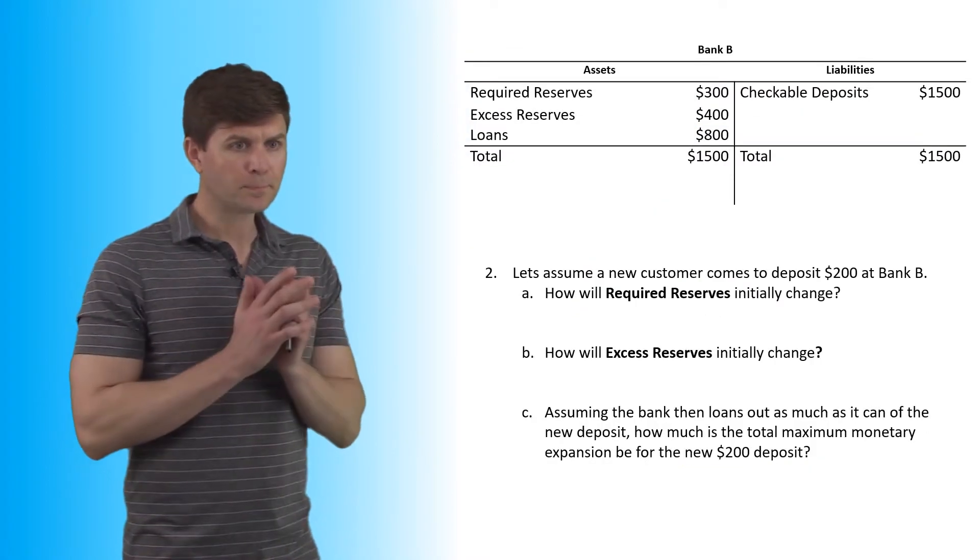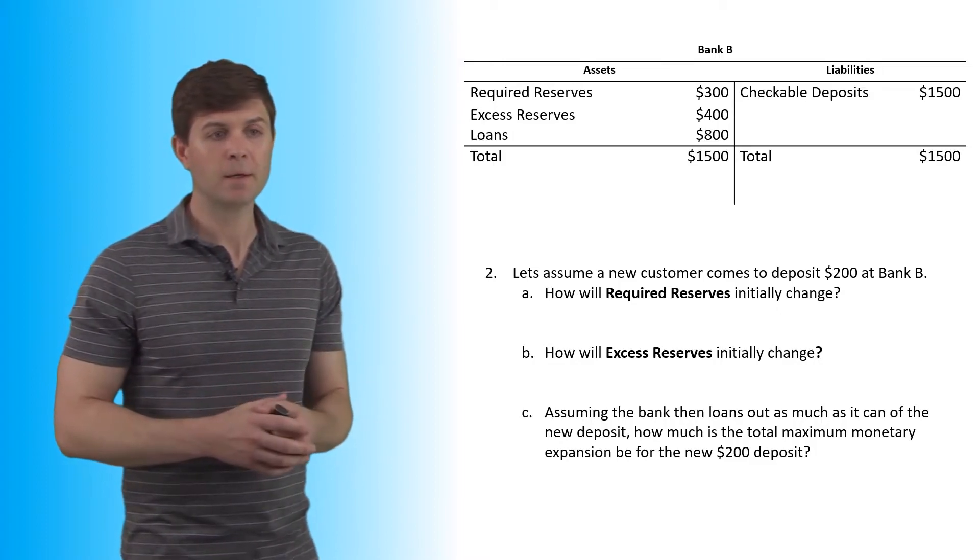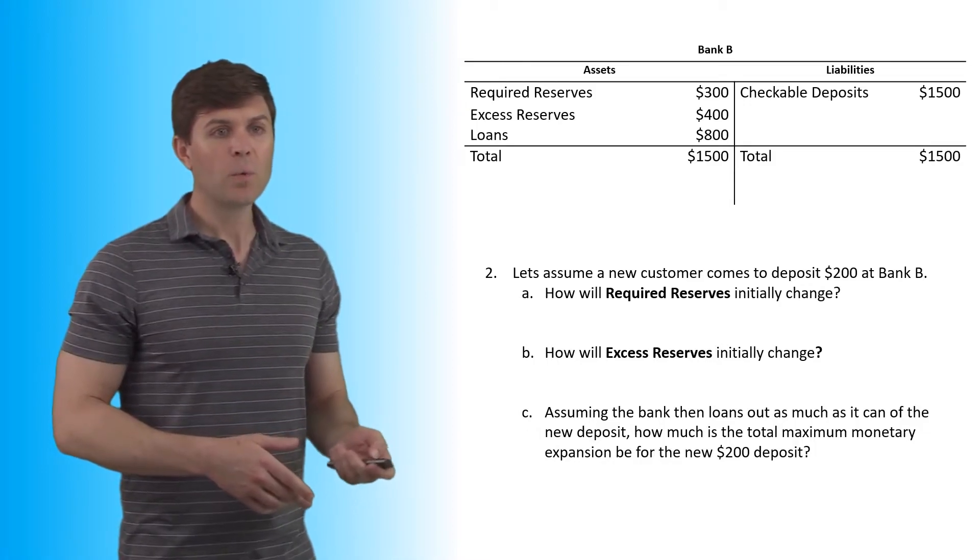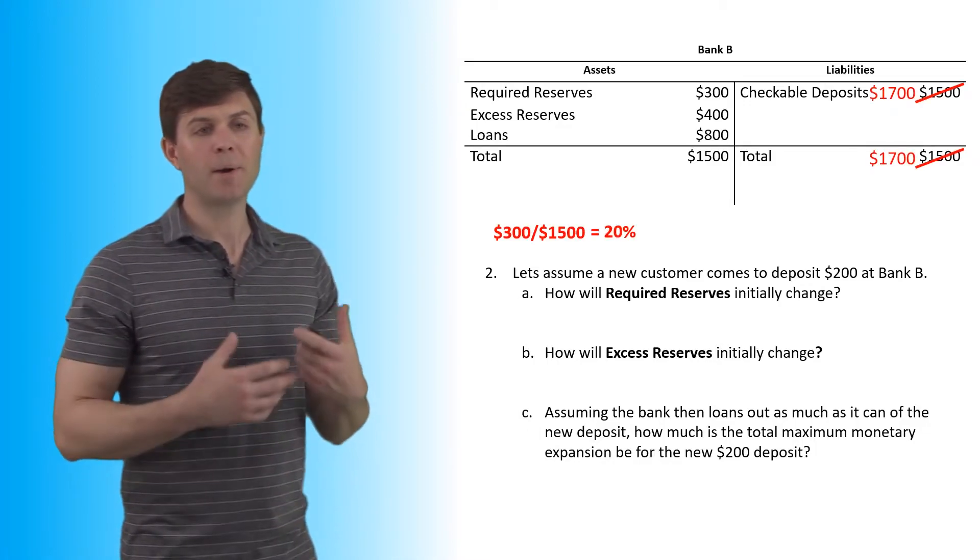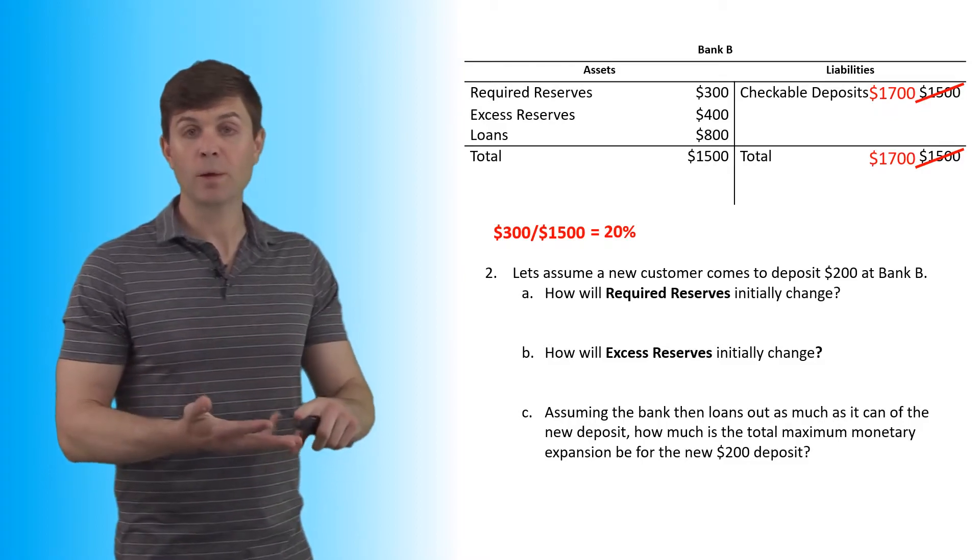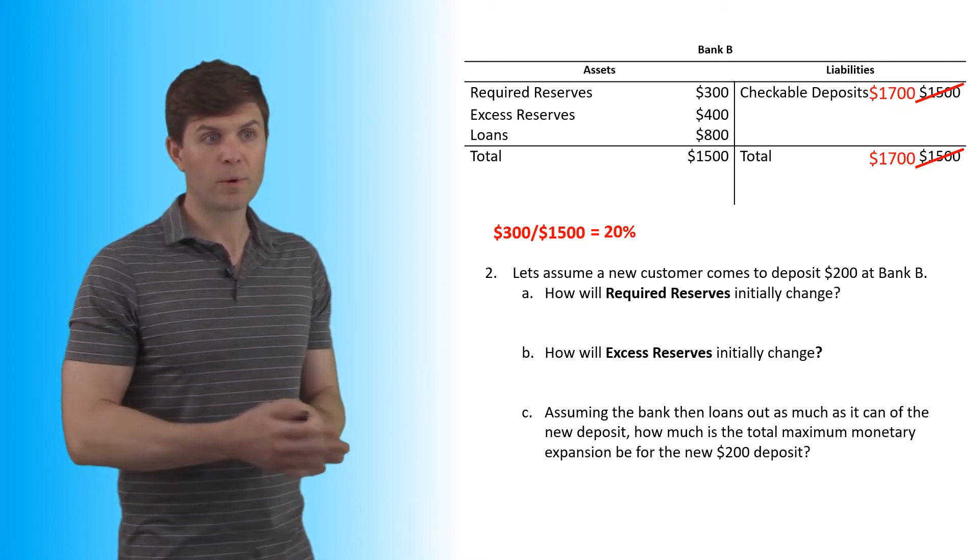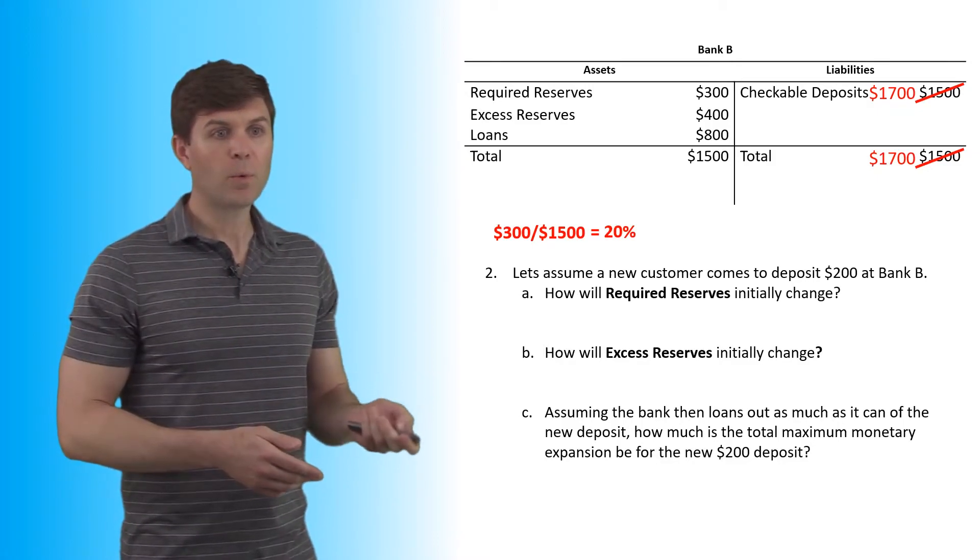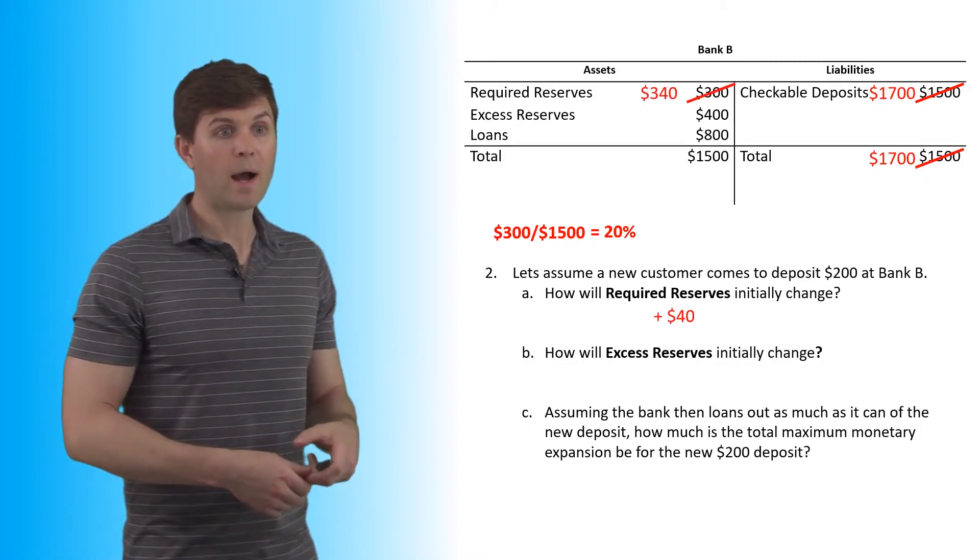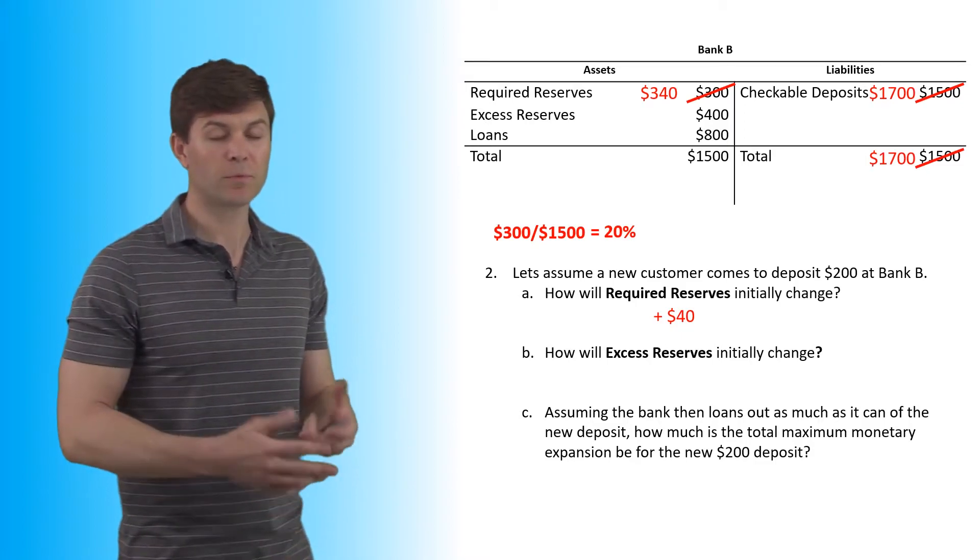All right, number two, let's assume a new customer comes to deposit $200 at Bank B. How will required reserves initially change is our first question. So we have a customer, he comes in and he deposits $200 into the account. All right, this is going to change our required reserves or excess reserves and our totals on both sides. So we know we have a 20% reserve requirement based on the numbers. So our required reserves are going to go up by 20% of that $200. So the $300 required reserves that we had before is now up to $340, so we've gone up by $40.